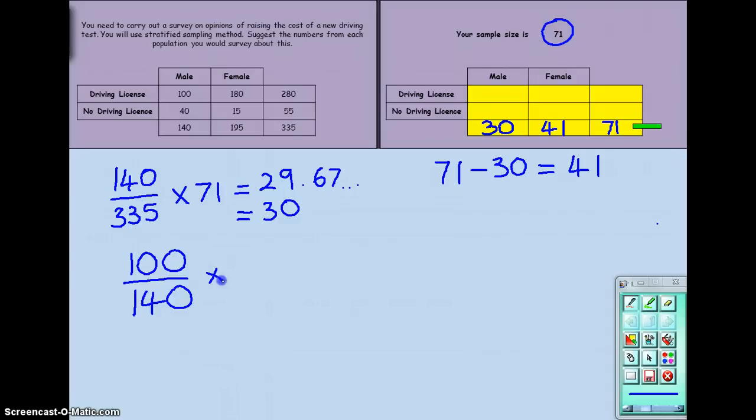Now, we have 30 males in our sample population. Notice it's not 71 anymore. We're looking specifically at the number of males. Now, again, using your calculator, that number comes out at 21.42.